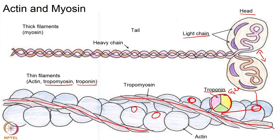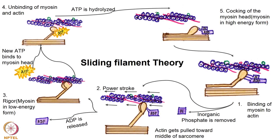The thin filament is composed of actin, tropomyosin, and troponin. Actin has the binding sites, tropomyosin covers them, and troponin exposes them when calcium is present, allowing myosin heads to interact with the binding sites whenever ATP is present. The thick and thin filaments slide over each other to produce force — this is the sliding filament theory, proposed by Huxley and Huxley.